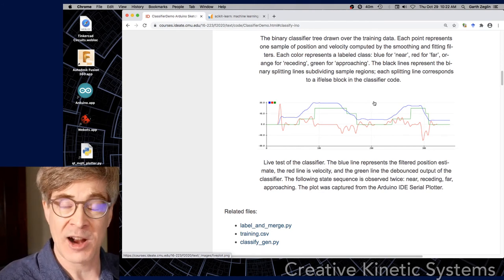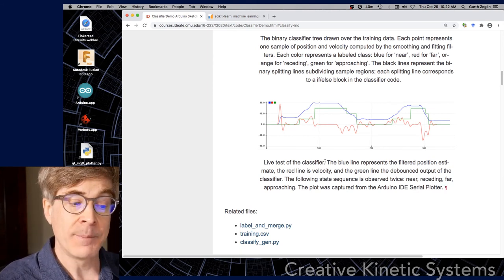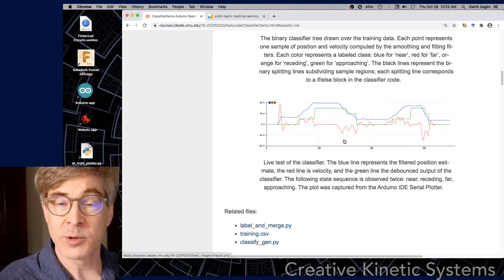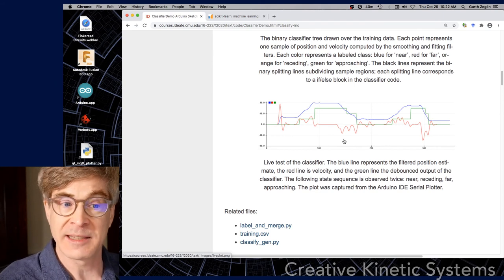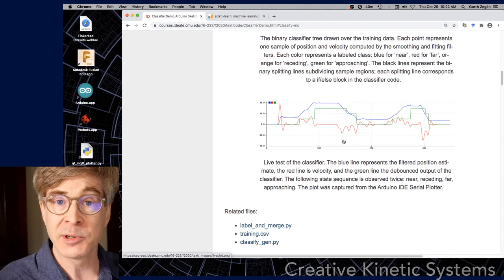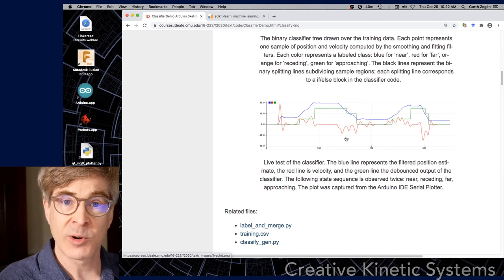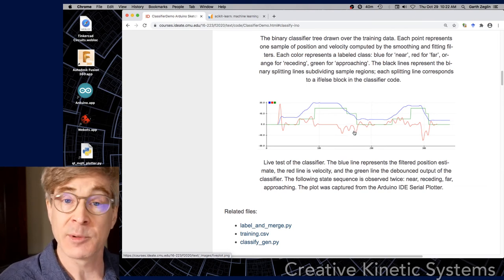So some care is required to think through which attributes will actually indicate in the output a meaningful change with regard to the classifications you care about. But those sensor values, those signals can come from different places. Here I'm using position and velocity of the same signal.